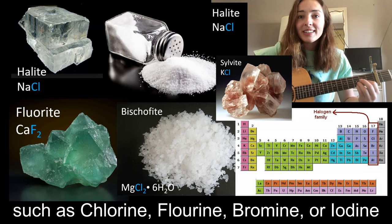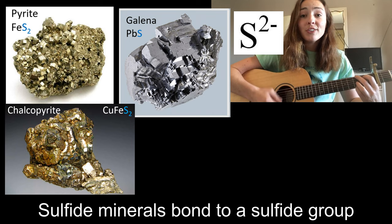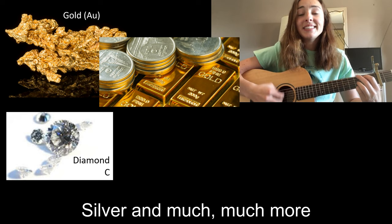Now on to the oxides — these minerals bond to oxygen. The sulfide minerals bond to a sulfide group. And now we are on to the native elements, which include gold, diamonds, silver, and much more.